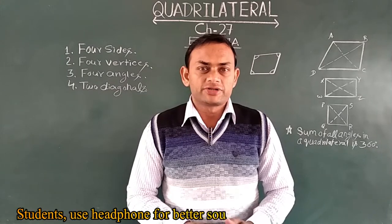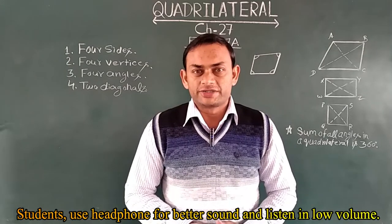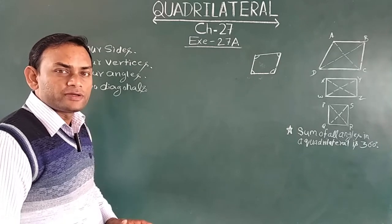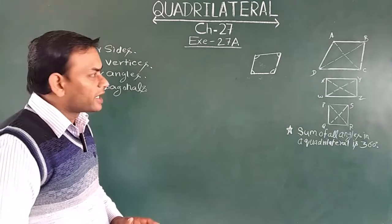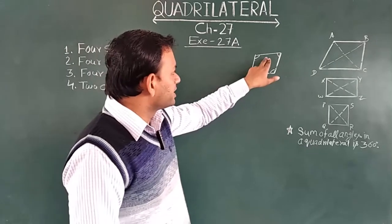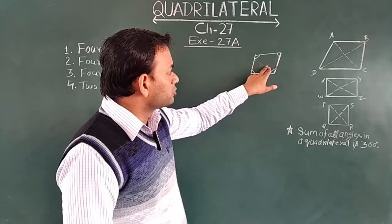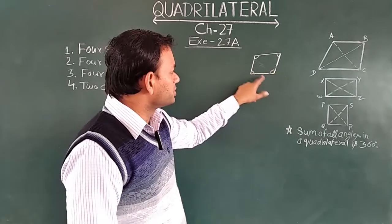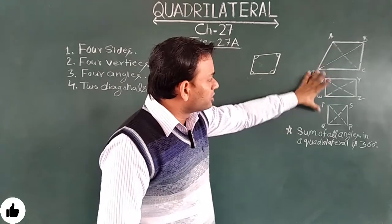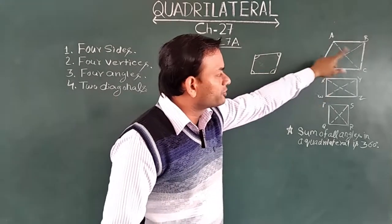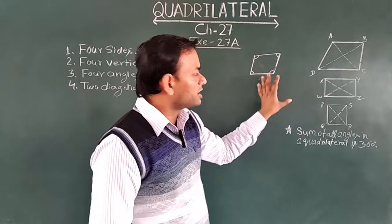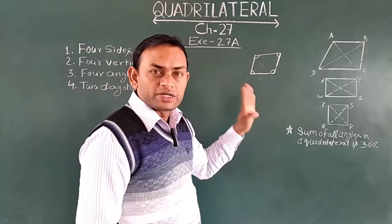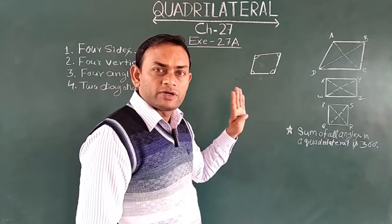First of all, let's understand what a quadrilateral is. A simple closed plane figure having four sides is called a quadrilateral. As you can see in this figure, this is a simple closed plane figure having four sides — 1, 2, 3, 4. The same applies to all these figures; you can see that four sides are there, so these are all quadrilaterals.